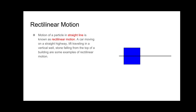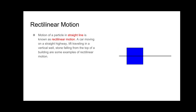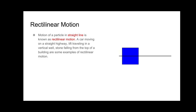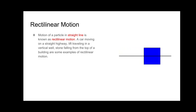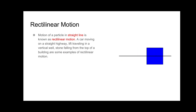There are two types of motion: rectilinear motion and curvilinear motion. Rectilinear motion is basically the motion of a particle along a straight line. Common examples of rectilinear motion are a car moving on a straight highway, a lift traveling in a vertical well, and a stone falling from the top of a building. You can also observe the animation on the right in which the object is moving along a straight line — that is rectilinear motion.